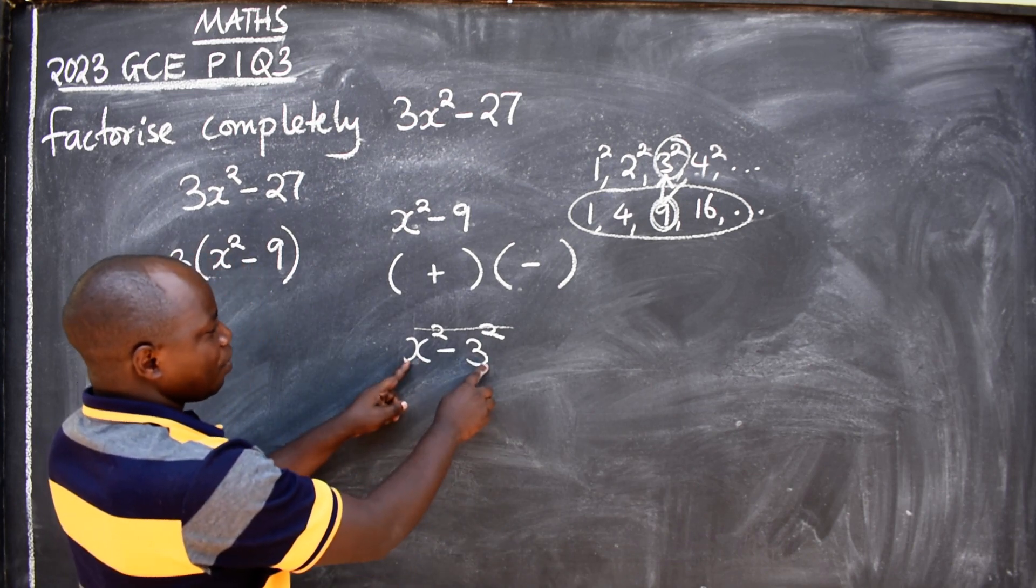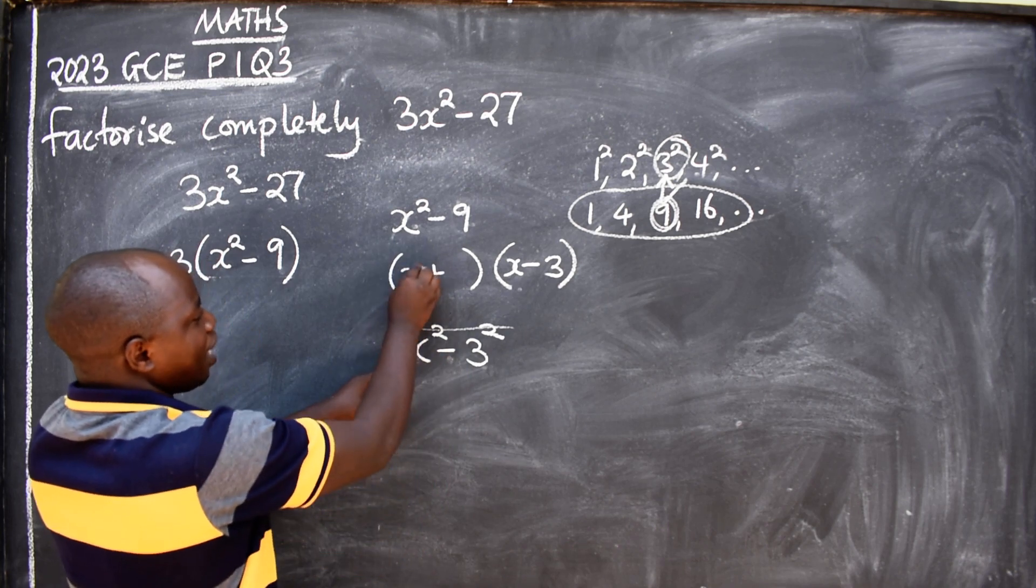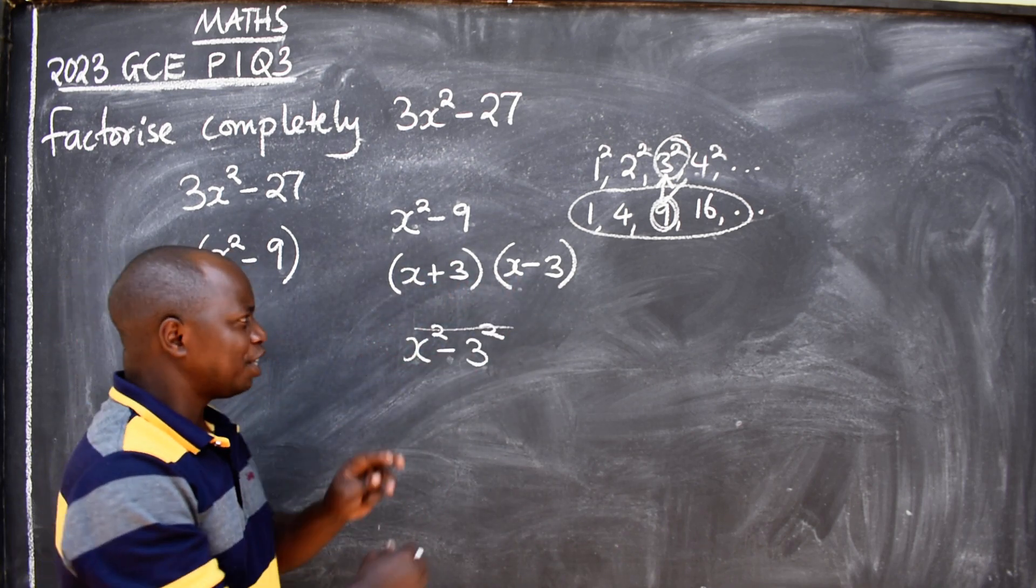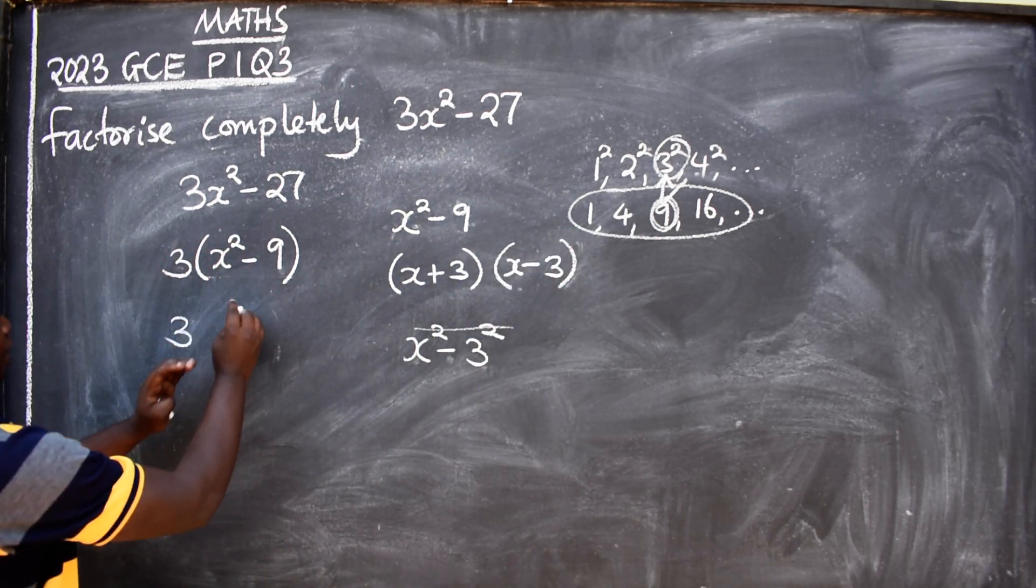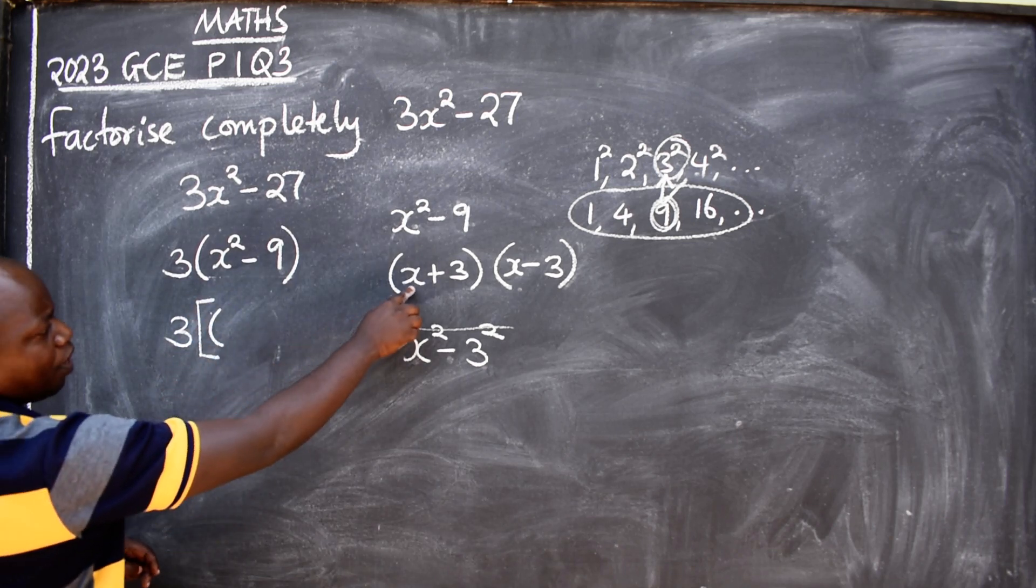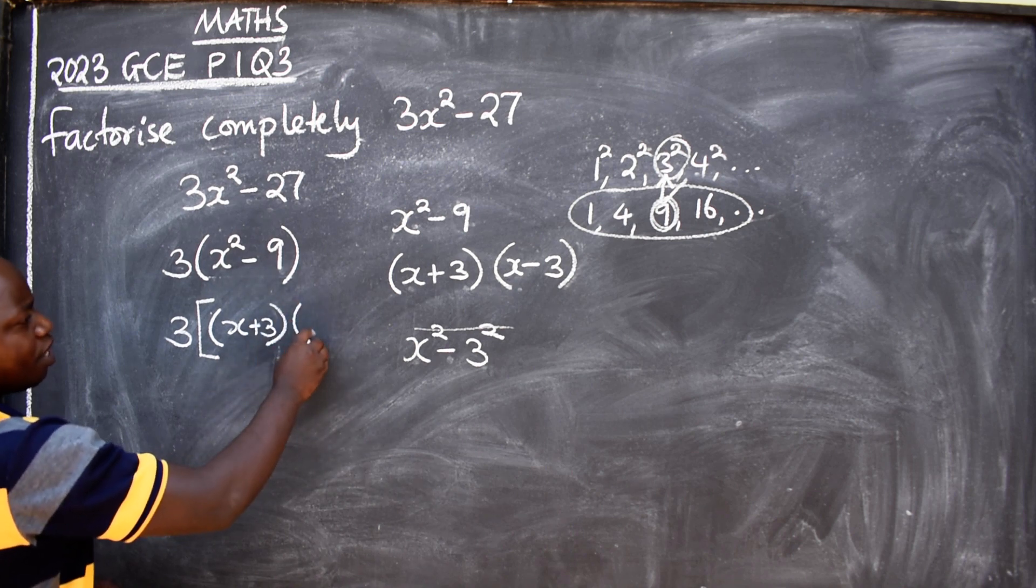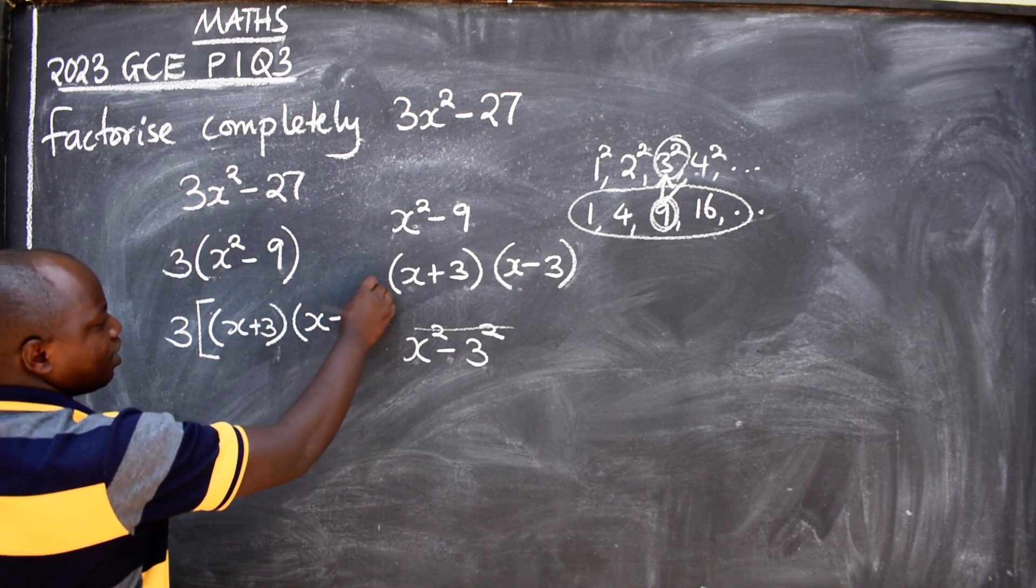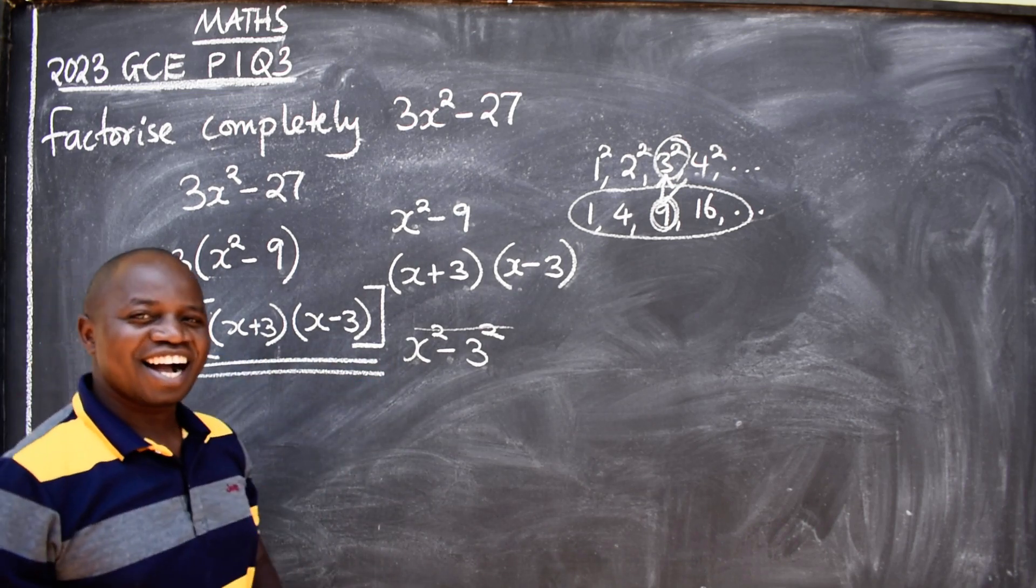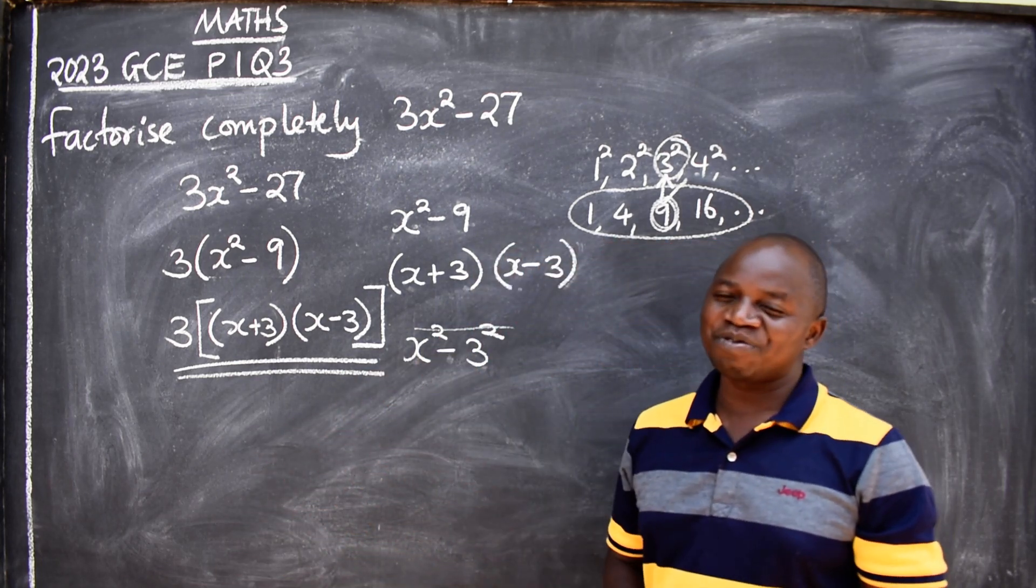So you are factorized. You see that, you use these brackets. Then you have x + 3, then the other one will be x - 3. This is your final answer: 3(x + 3)(x - 3). That's the way you should be able to factorize such kind of questions. I hope you have learned. Thank you for watching.